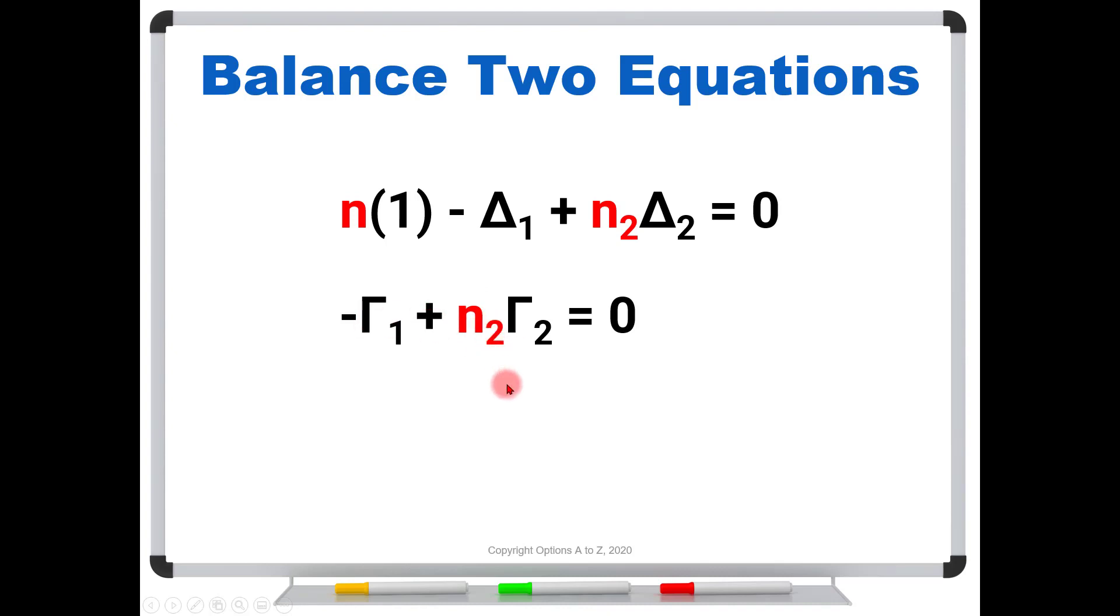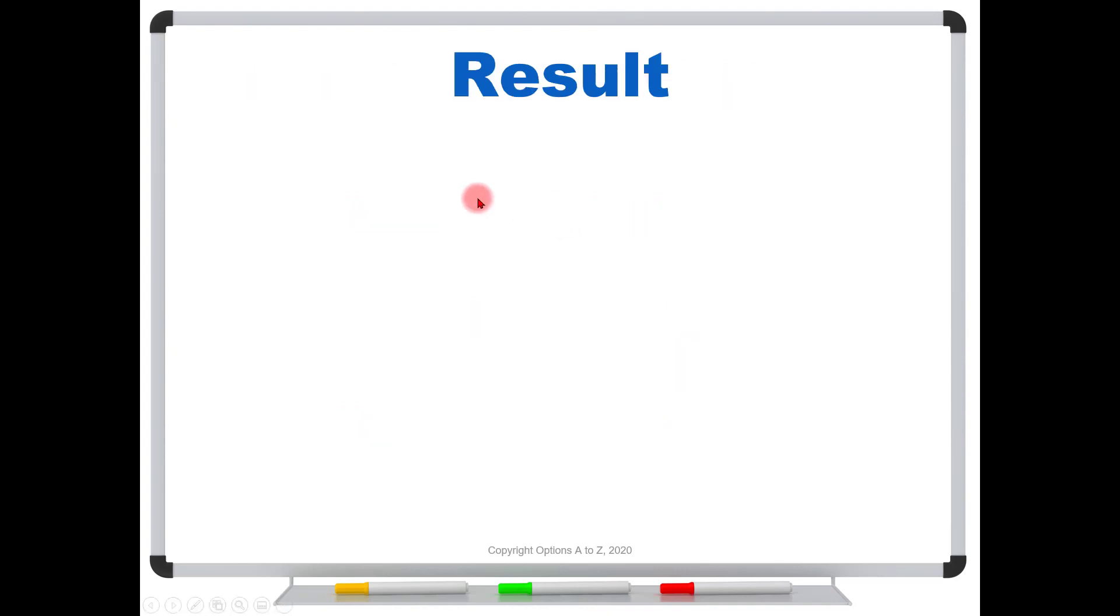So we just solve it algebraically. And we would find that N2 is the ratio of these gammas. The gamma of the first option divided by the gamma of the second. And that's going to give me a number. And notice that this N2 is also what we need up here. So whatever this number is, I'm going to plug in right there. I know my delta of the second option. I know my delta of the first option. I know my delta for stock is one. So all of these we just plug in and we can solve for it.